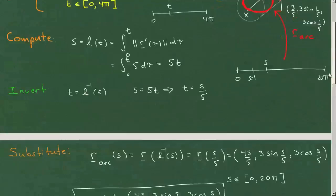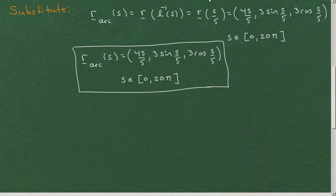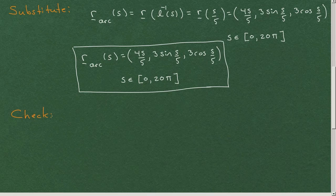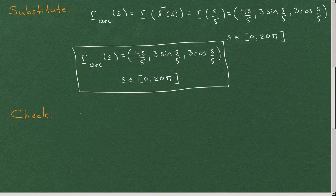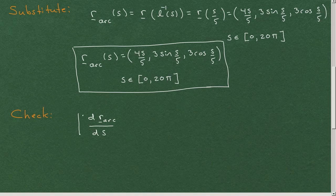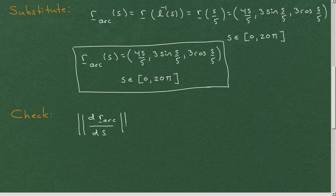And one final thing I want to say about this is that always with an arc length parametrization, you can check, you can and probably always should just verify that it is an arc length parametrization. And you'll know this because if you differentiate an arc length parametrization with respect to arc length s, and look at that modulus, you'd better get 1.